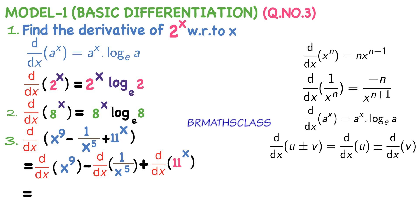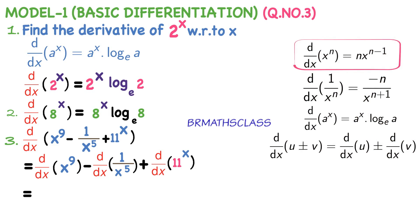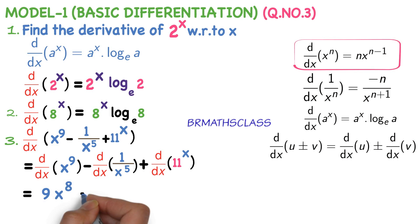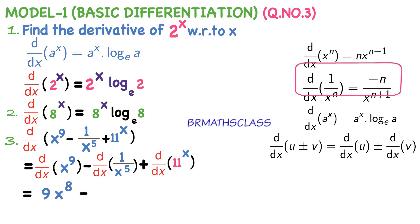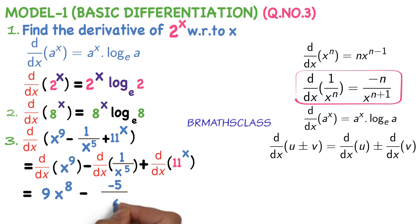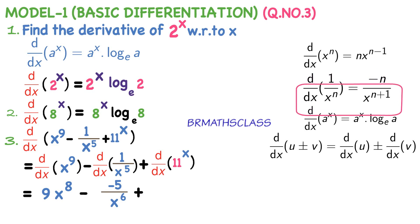d by dx of x power 9: using the formula d by dx of x power n equals n into x power n minus 1, the derivative of x power 9 is 9 into x power 8. For d by dx of 1 by x power n, the formula gives minus n divided by x power n plus 1. Applying this, the derivative of 1 by x power 5 is minus 5 divided by x power 6.